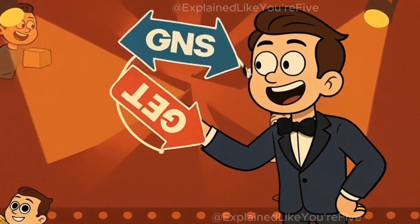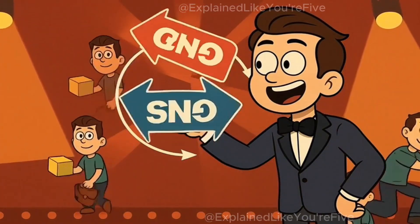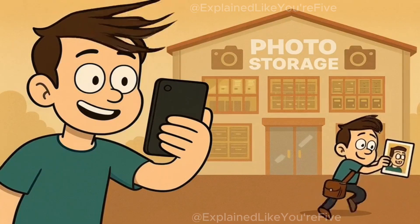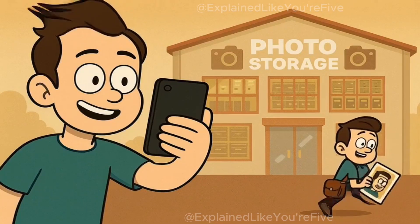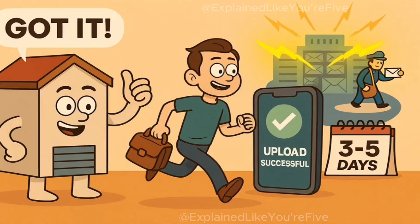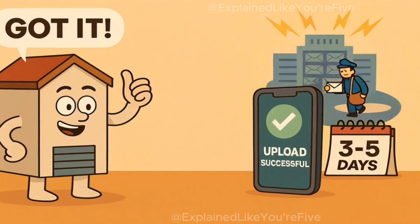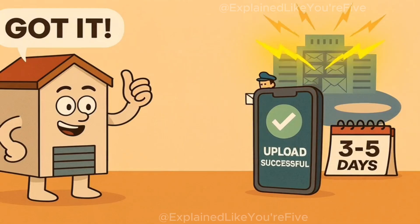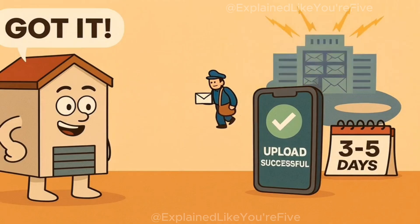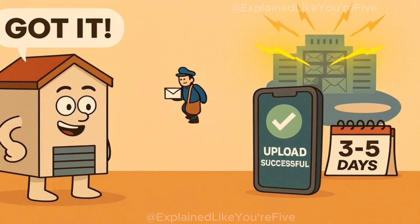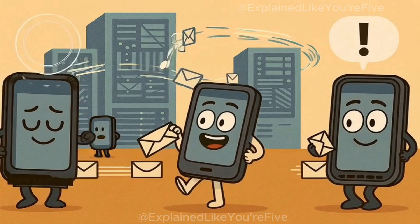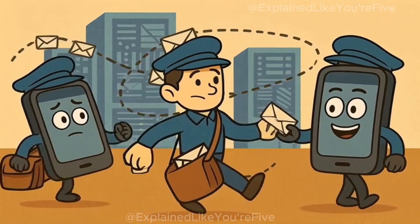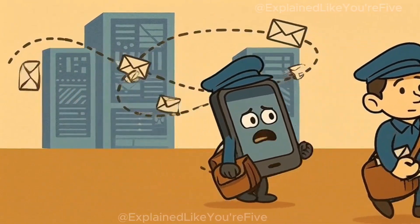But wait, there's even more. APIs don't just get information — they also send information. When you post a photo on social media, your app's API waiter takes that photo and runs it over to the social media company's big photo storage building. The storage building says, got it, we'll keep this safe. And the API waiter runs back to tell your app: photo uploaded successfully. Think of APIs like a giant mail system, but instead of taking days to deliver letters, everything happens instantly. Your apps are constantly sending little messages to other computer systems, asking for information or giving information. The APIs are the mail carriers that make sure all these messages get delivered to the right place.